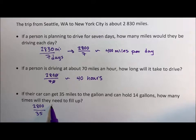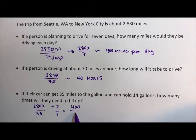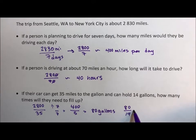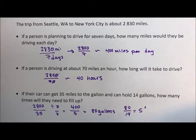I know seven goes into these numbers, so I'm going to divide the seven out of top and bottom, and I'm going to get 400 divided by five — that's about 80 gallons. So I'm going to need 80 gallons of gas. And then 80 divided by 14 is five and then some. I don't care about a decimal — how many times do I need to fill up? It's more than five, and I'm not going to do a partial fill up on the middle of a road trip, so I'm going to say six fill ups.